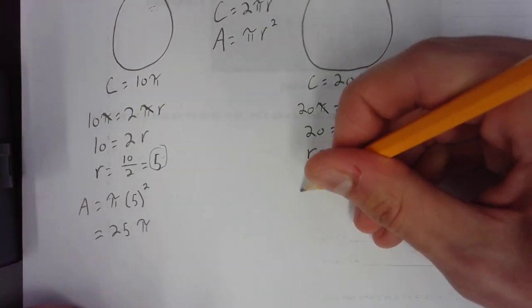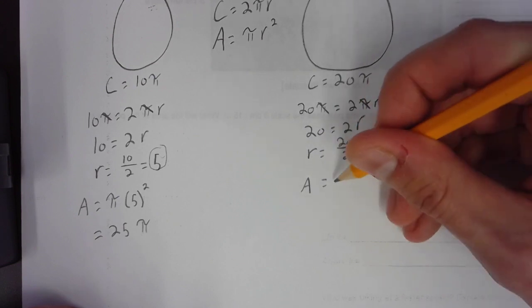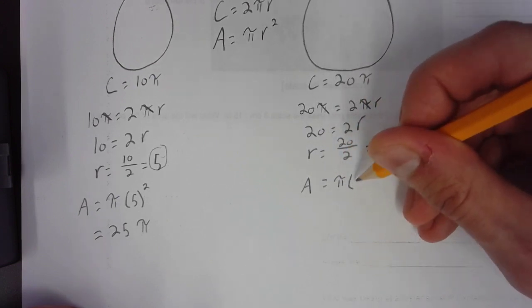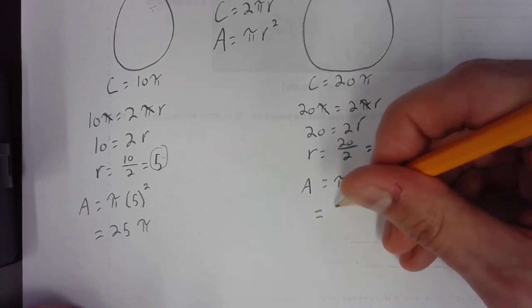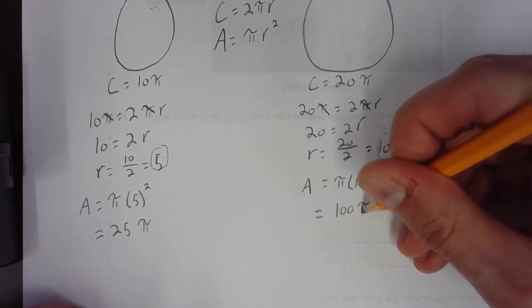Now we're looking for the area on the extra-large pizza. That is going to be πr, which in this case is 10 squared. So, the area here is going to equal 100π.